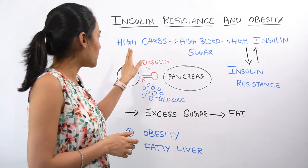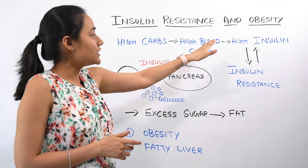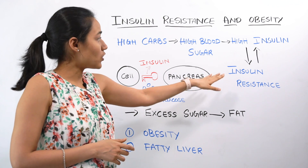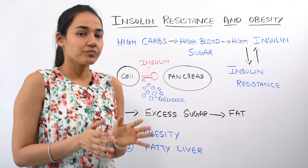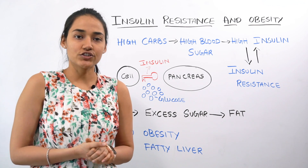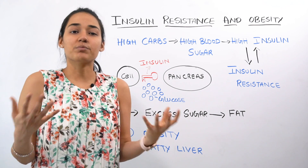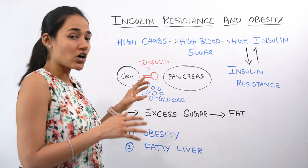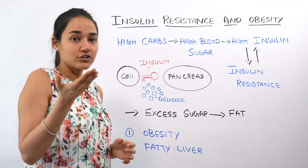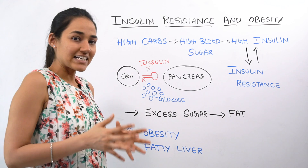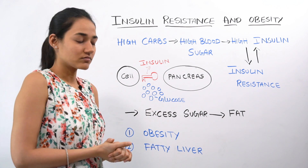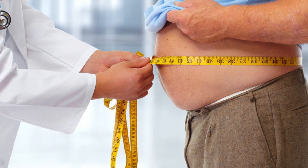When you consume high carbohydrates, that triggers high blood sugar, which leads to high levels of insulin and causes insulin resistance. Insulin resistance can also cause high levels of insulin. A normal cell responds to insulin and absorbs glucose, but in an insulin resistance condition, your cells resist insulin — they don't respond to it. So when glucose does not enter your cell and remains in the blood, that leads to high blood sugar, and your insulin stores that excess sugar as fat — it basically converts that excess sugar into fat. So that leads to obesity and fatty liver.